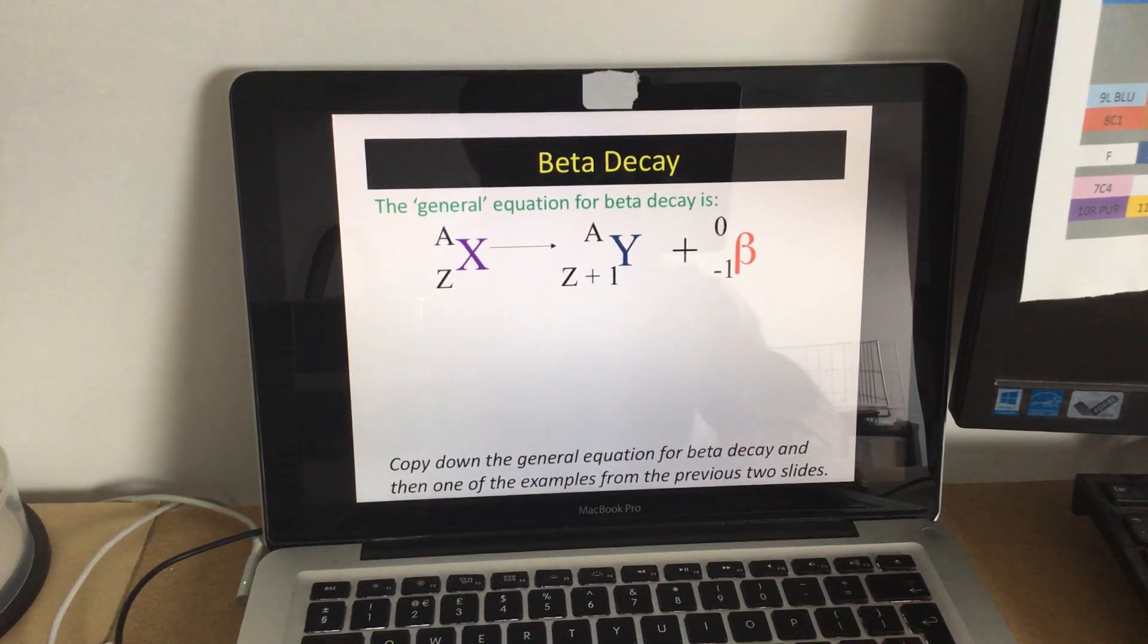We don't need gamma, because there are no decay equations with gamma, just alpha and beta. Hope that helps. This is in your PowerPoint. Good luck.